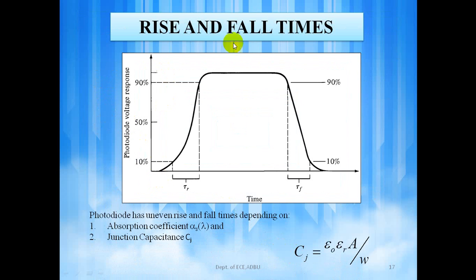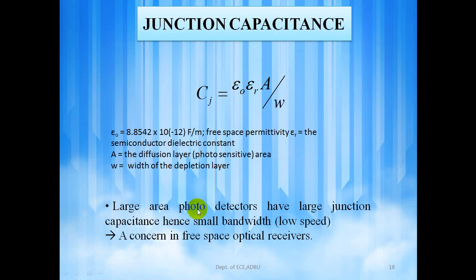The rise time and the fall time of a photodiode is defined as the time for the signal to rise or fall from 10% to 90% or 90% to 10% of the final value respectively. Photodiode has uneven rise and fall times depending on absorption coefficient and junction capacitance. Junction capacitance is the product of Epsilon-R area divided by width of the depletion layer. Large area photodetectors have large junction capacitance and small bandwidth, which is the concern in free-space optical receivers.